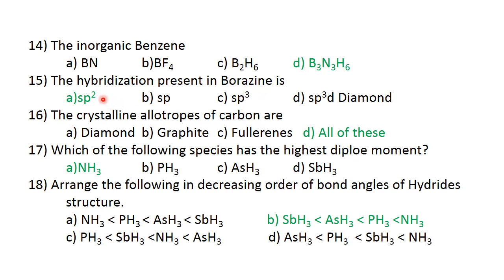The crystalline allotropes of carbon are diamond, graphite, fullerene. All of these are crystalline allotropes of carbon.